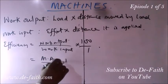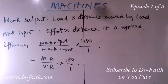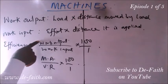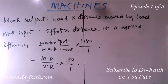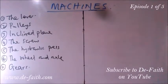If you have an efficiency lesser than 100, it means the work output is lesser than the work input, and likewise the mechanical advantage is lesser than the velocity ratio. 100% efficiency means that friction and other factors have been eliminated. But the question is: do we really have any machine that is 100% efficient?